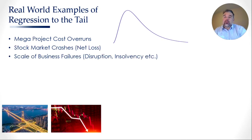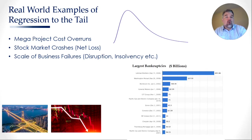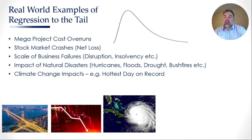Another good example is stock market crashes and the scale of business failure. A famous case: in 2001, Enron shocked the world with a bankruptcy of roughly $65 billion. Only seven years later, Lehman Brothers beat that with a bankruptcy of roughly $690 billion. So the law of regression to the tail tells us that the next record bankruptcy we should expect will probably be in the vicinity of about a trillion dollars — that's going to impact tens of thousands of people.